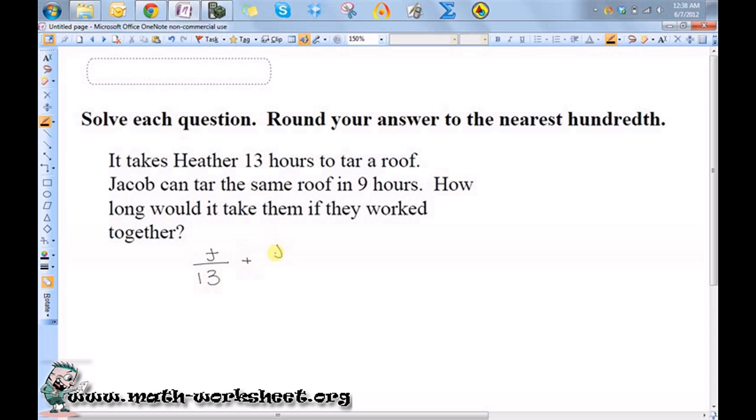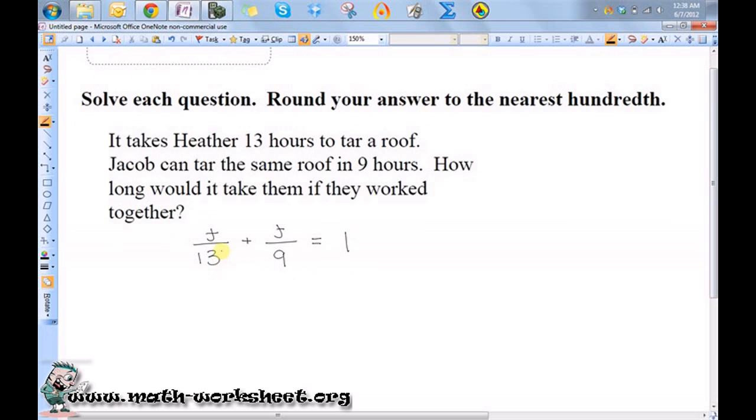Plus t over the amount of time it takes the second person to do the job, and the sum should add to 1. So what I'm going to do is multiply both sides of this equation by the least common denominator of these two fractions.